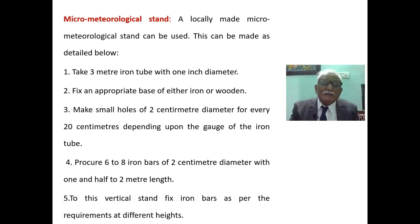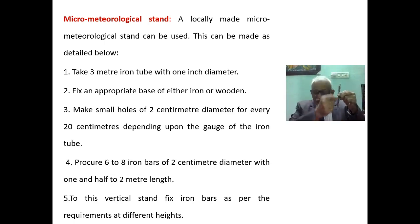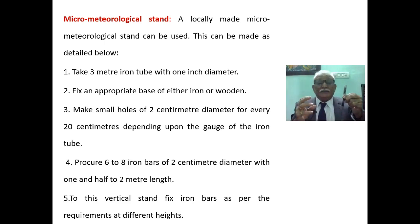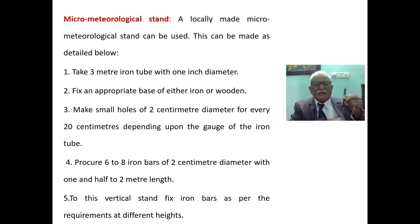This is how to develop a micrometeorological stand. It is simple. Take a locally made micrometeorological stand, maybe 3 meters in length. Take a 3-meter iron pipe with 1-inch diameter, fix it on an appropriate base of either iron or wood. Then make small holes of 2 centimeters diameter for every 20 centimeters along the pipe.